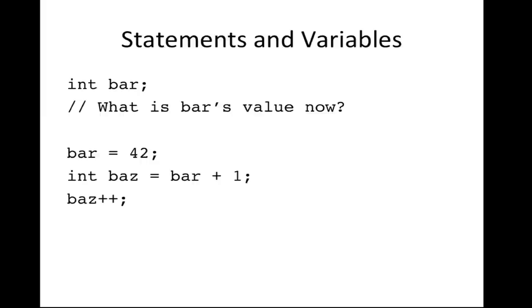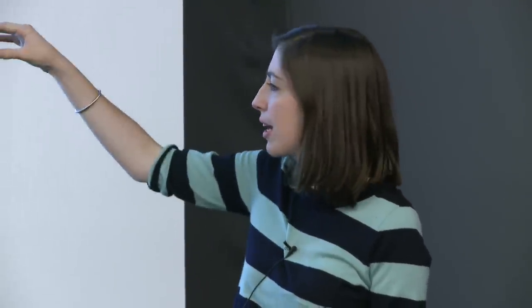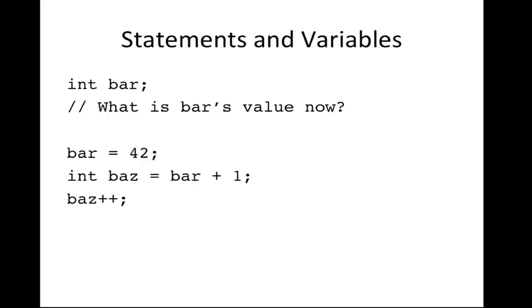On statements and variables: when we create a new variable, we first declare it — for example, 'int bar' declares a variable but doesn't give it a value, so it could hold a garbage value. We then initialize it, e.g., bar = 42. This can be done in one line: int bar = 42. Below that, int bas = bar + 1 declares and initializes bas to 43. After incrementing bas with ++, if we print bas at the end of the block, it would be 44.